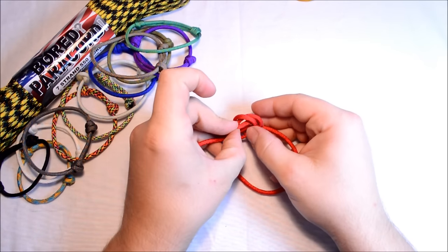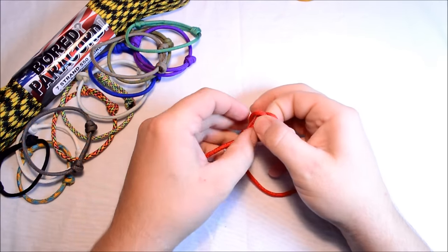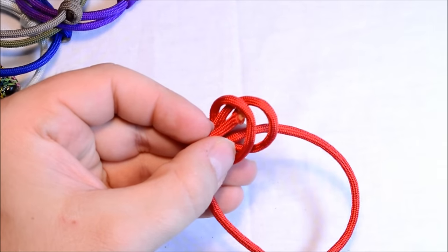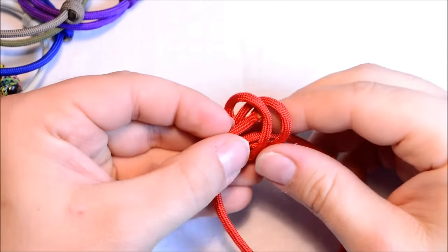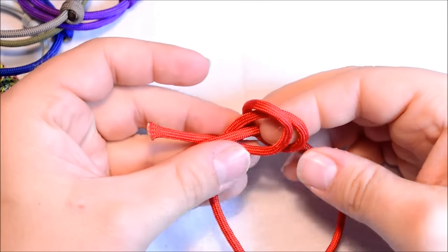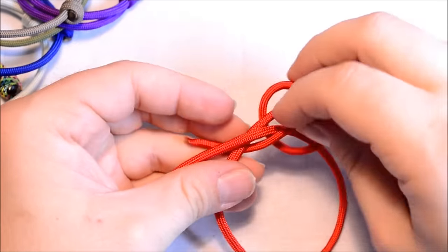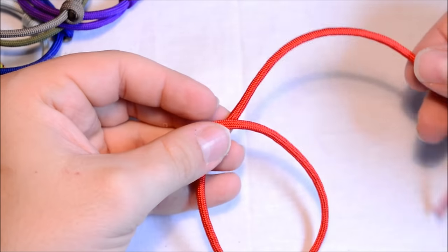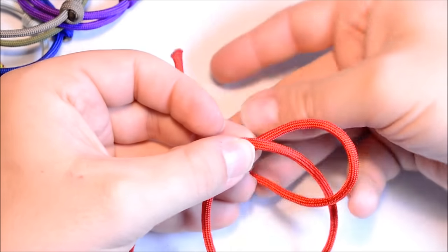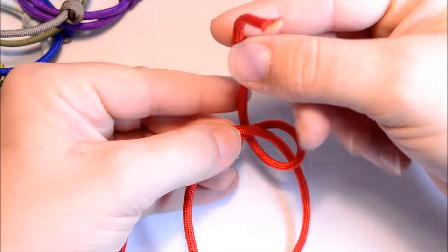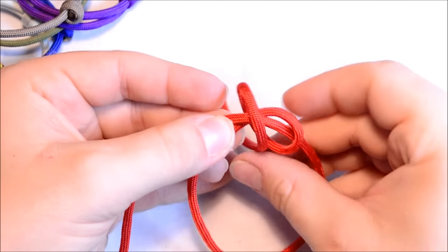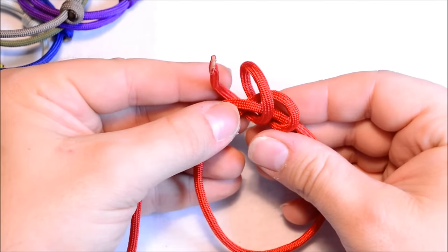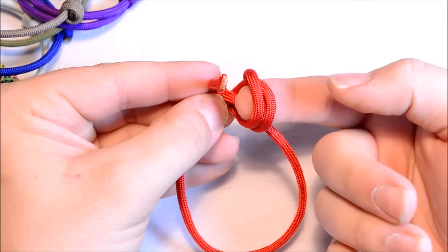Okay, so you're going down through the center, around the back coming at you, down through the center, around the back coming at you. Now you're going to have two loops here. You want to make sure that second loop is on the left.